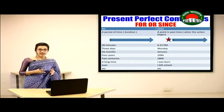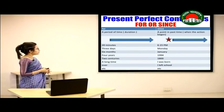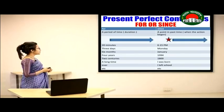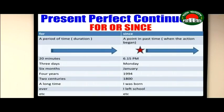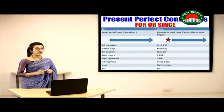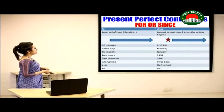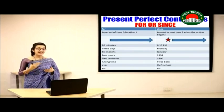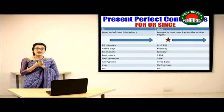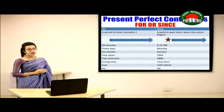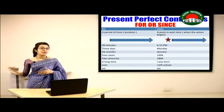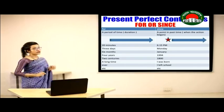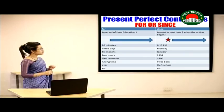There is a common confusion about when to use 'for' and 'since.' If you are referring to a duration — a period of time — you use 'for.' For example: 'I have been living here for 3 years' — this refers to the duration of living. On the other hand, 'since' is used when the time refers to a point in the past when the action began. For example: 'It has been raining since Monday' — the rain started on Monday.